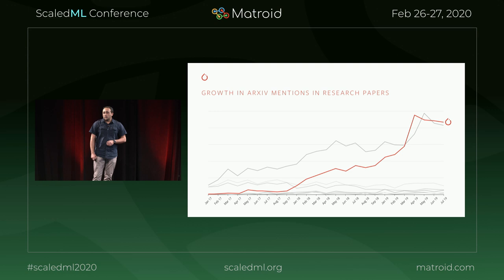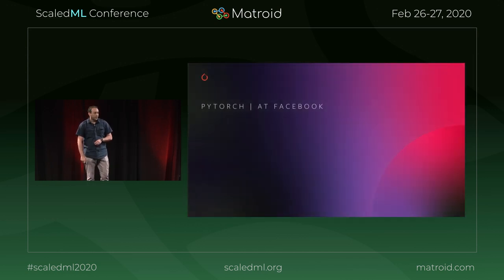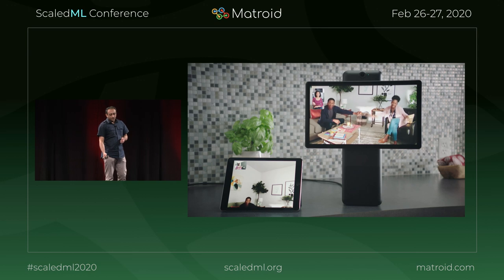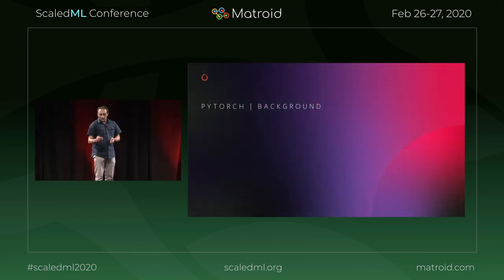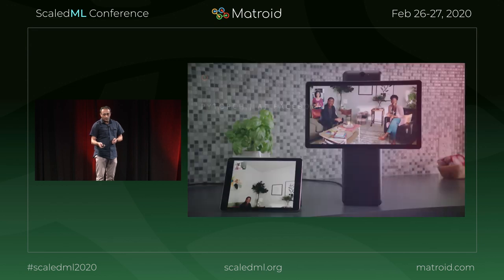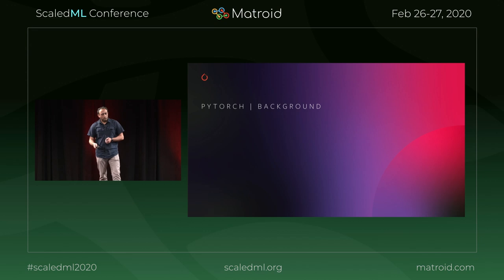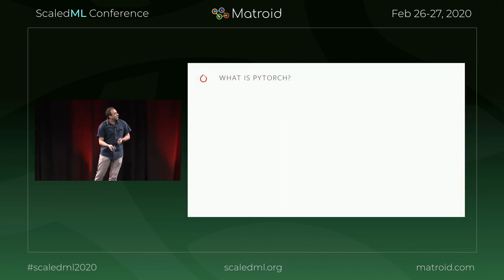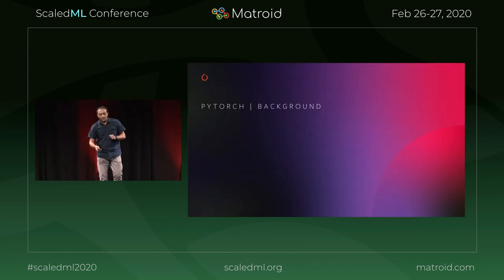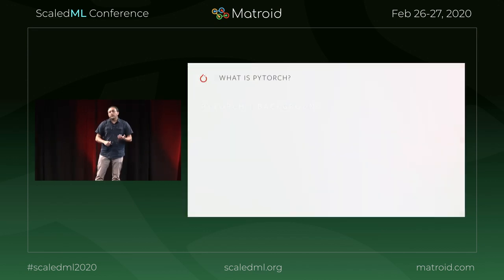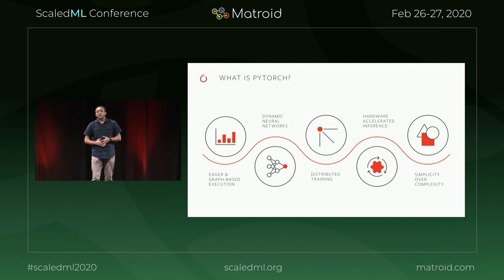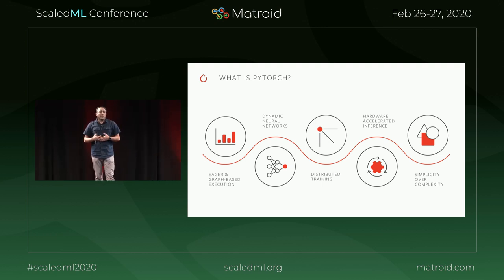As PyTorch has been growing in the external and open source community, it also has been growing at Facebook. We have been using it pretty much in all our products — in ranking and recommendation models, in content understanding, and to detect offensive and objectionable content on the platform. It has been growing a lot in adoption at Facebook in terms of number of use cases.